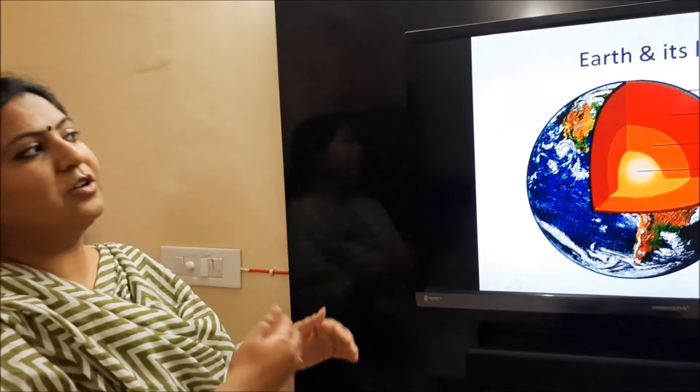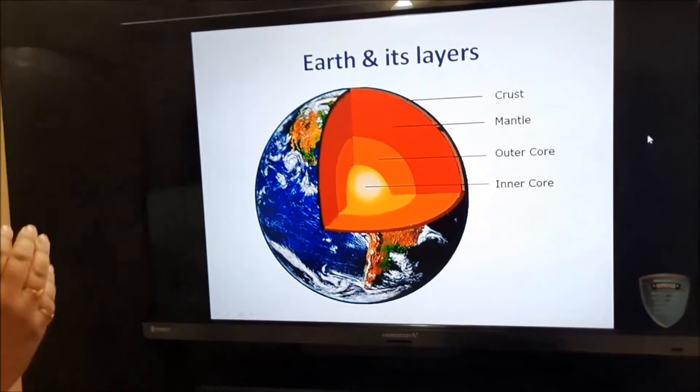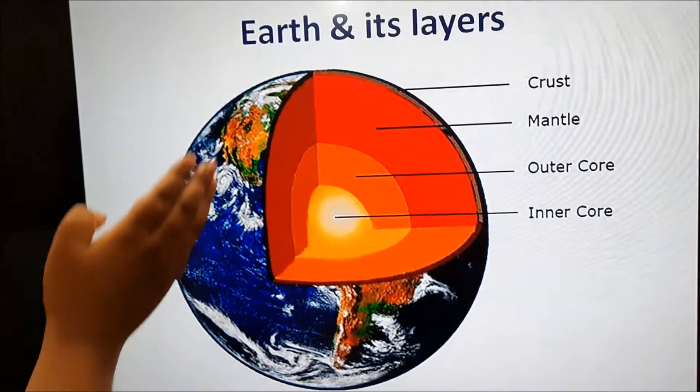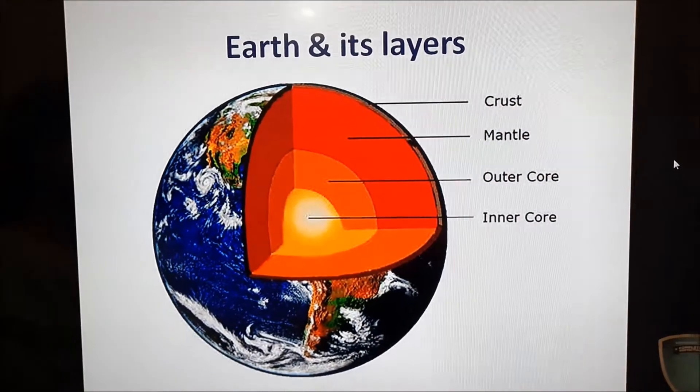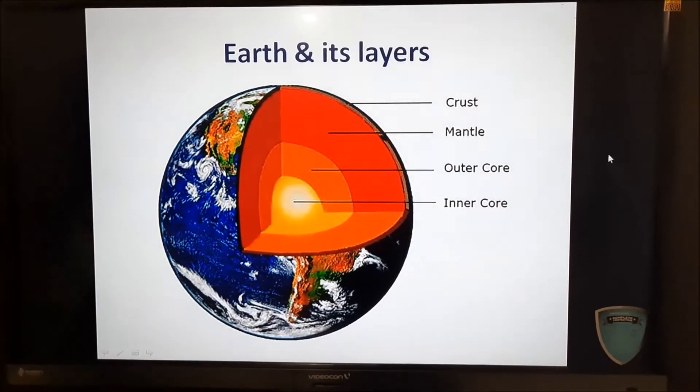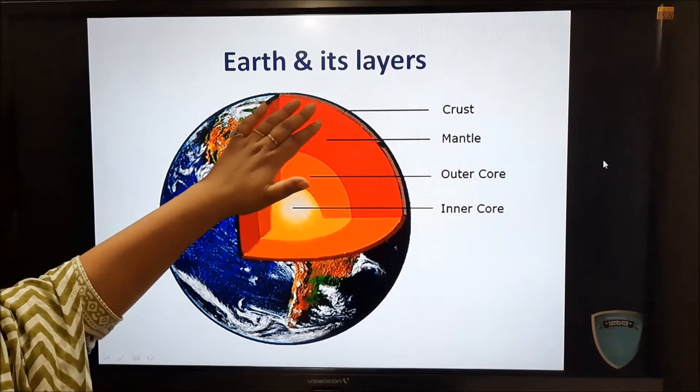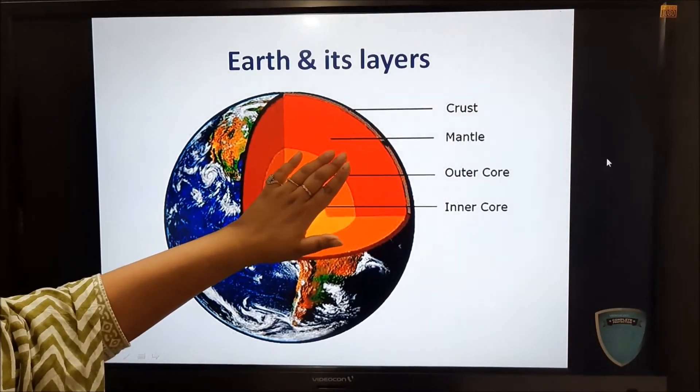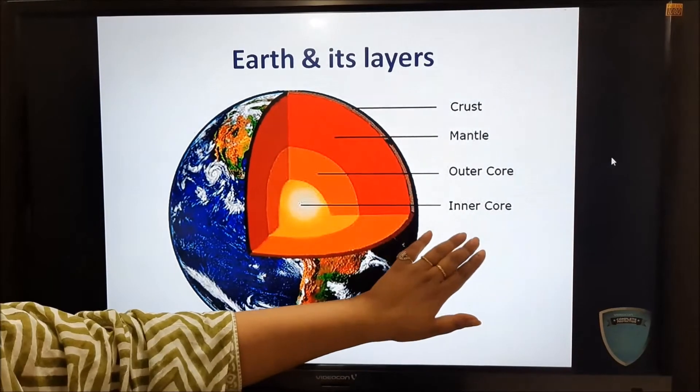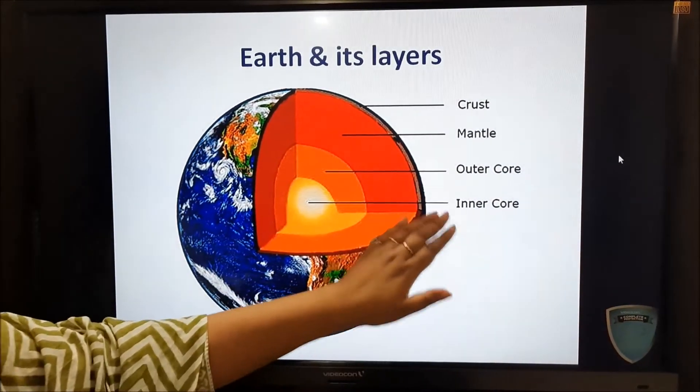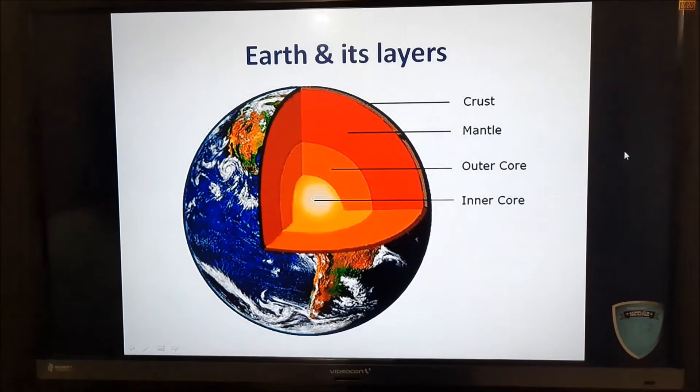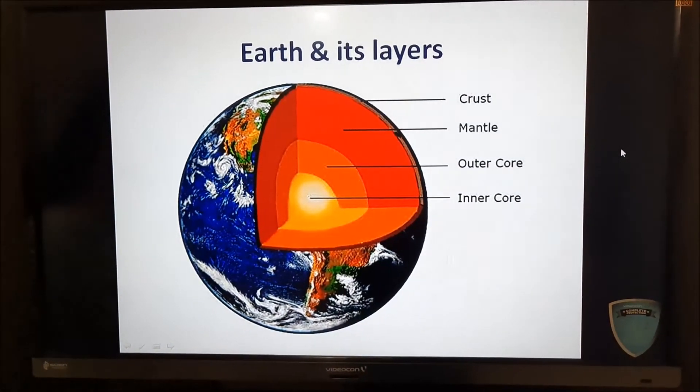So Earth has water and oxygen which is required by us to live. So talking about the layers, there are basically three layers of Earth. The first layer is the crust, then comes mantle, then comes the core. Core is divided into two parts, which we will learn in the coming slides.